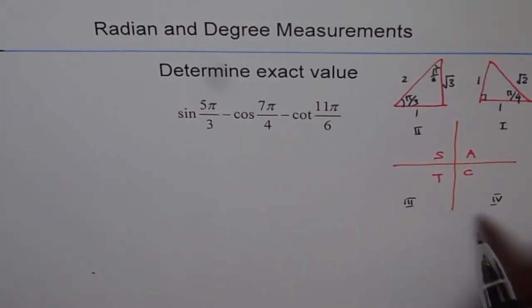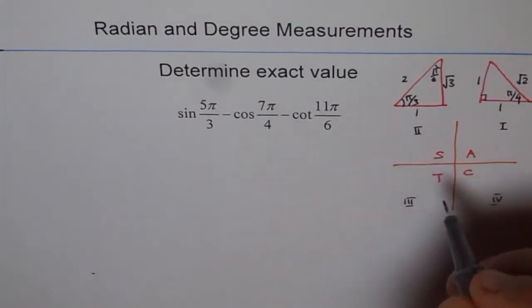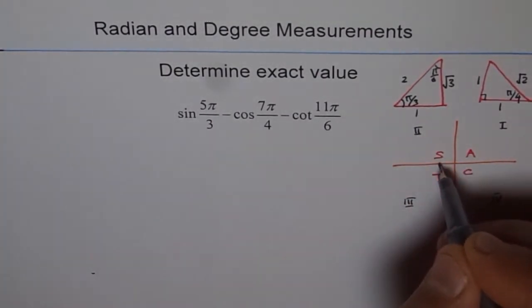They start from here. So these are 4 quadrants. We know now sine 5π/3. Where will this angle be? Now π/3 is when you divide this π into 3 equal parts. So we get 3 parts here.